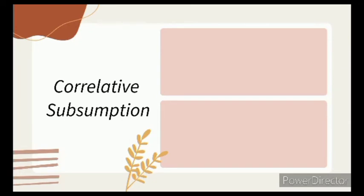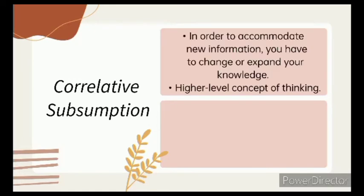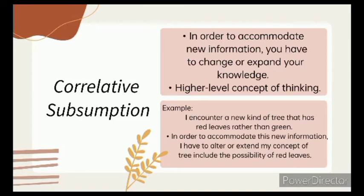So now let's proceed to the Correlative Subsumption. So in order to accommodate new information, you have to change or expand your knowledge, and it is a higher level concept of thinking. For example, suppose I encounter a new kind of tree that has red leaves rather than green. In order to accommodate this new information, I have to alter or extend my concept of tree to include the possibility of red leaves. I have learned about this new kind of tree through the process of Correlative Subsumption.